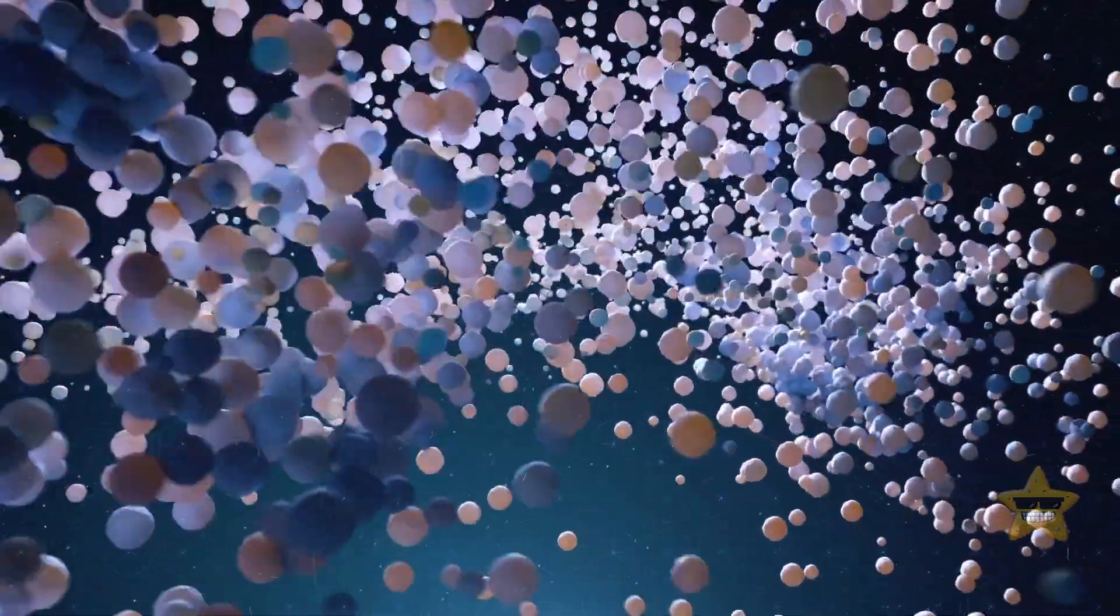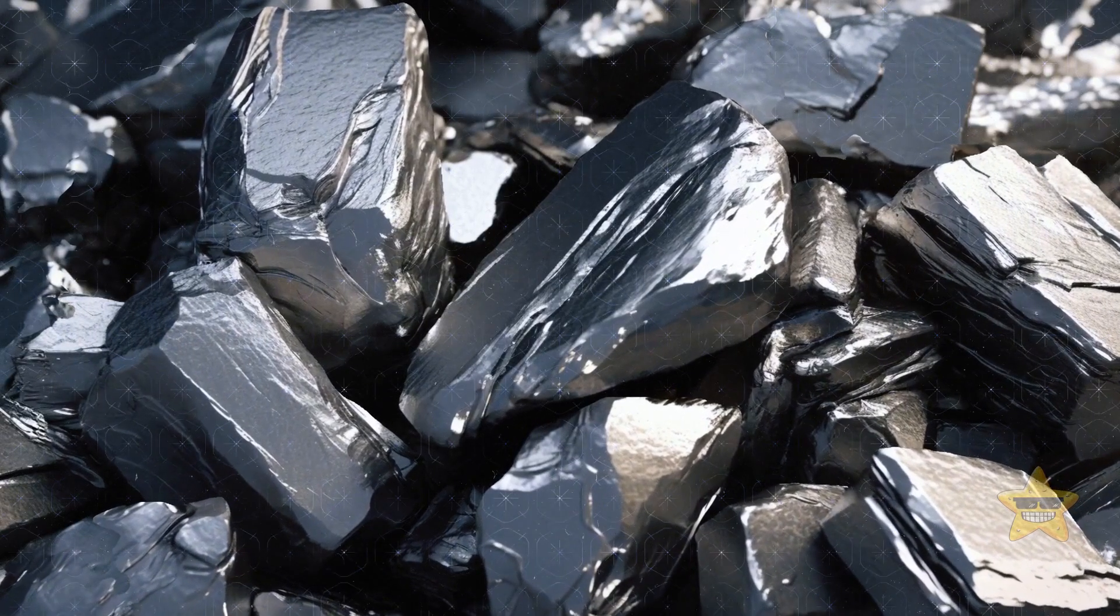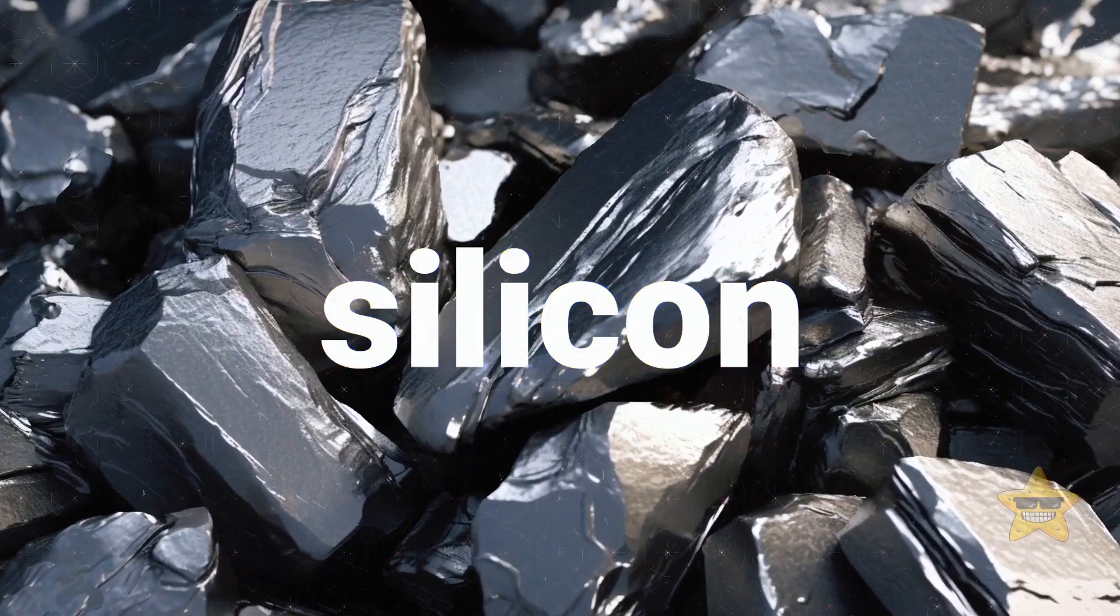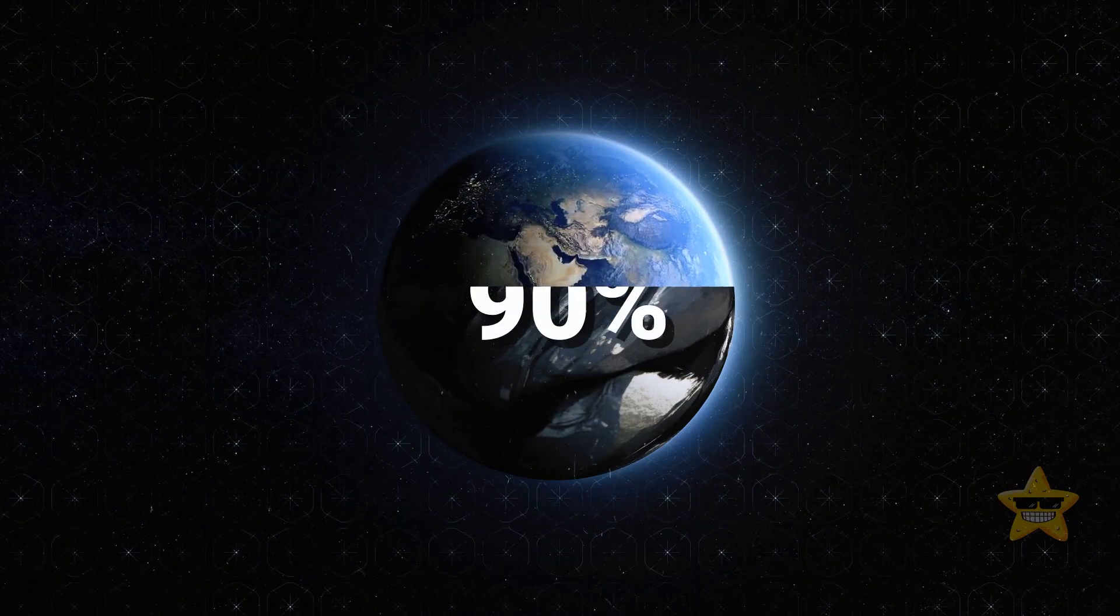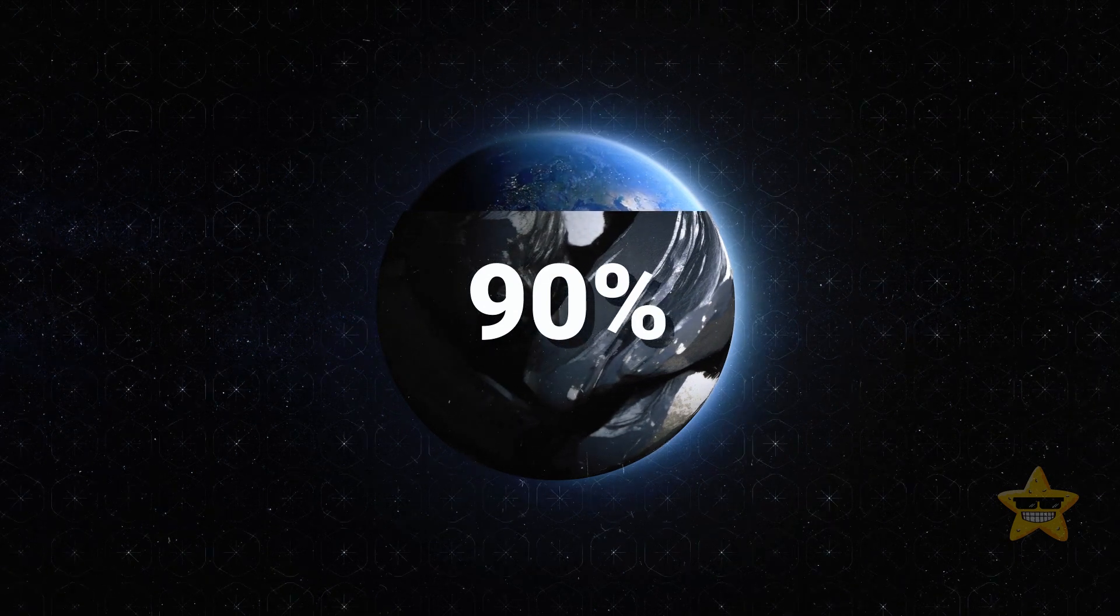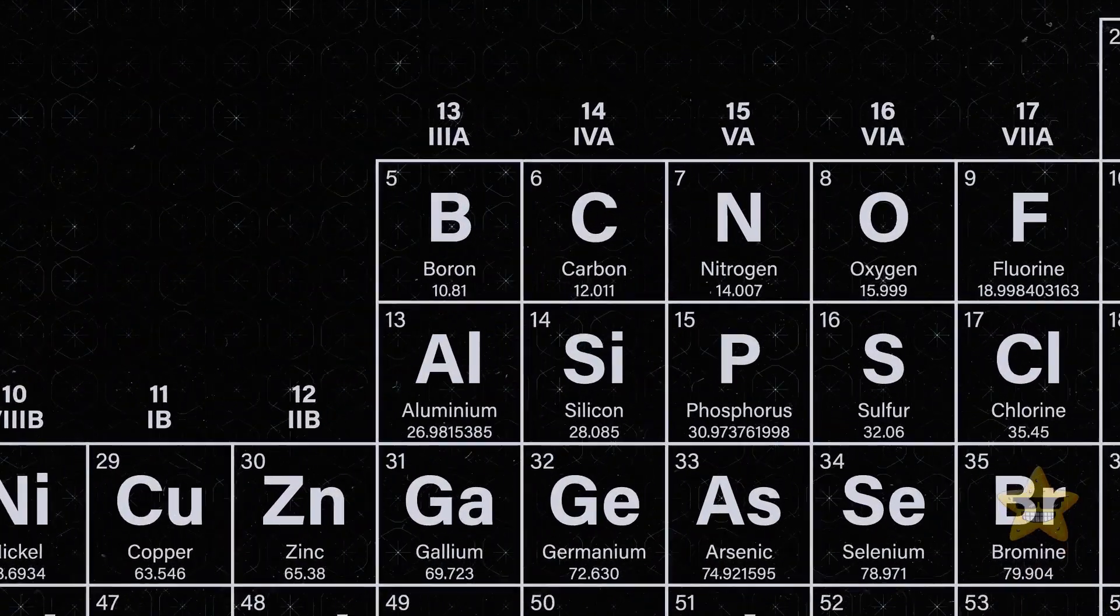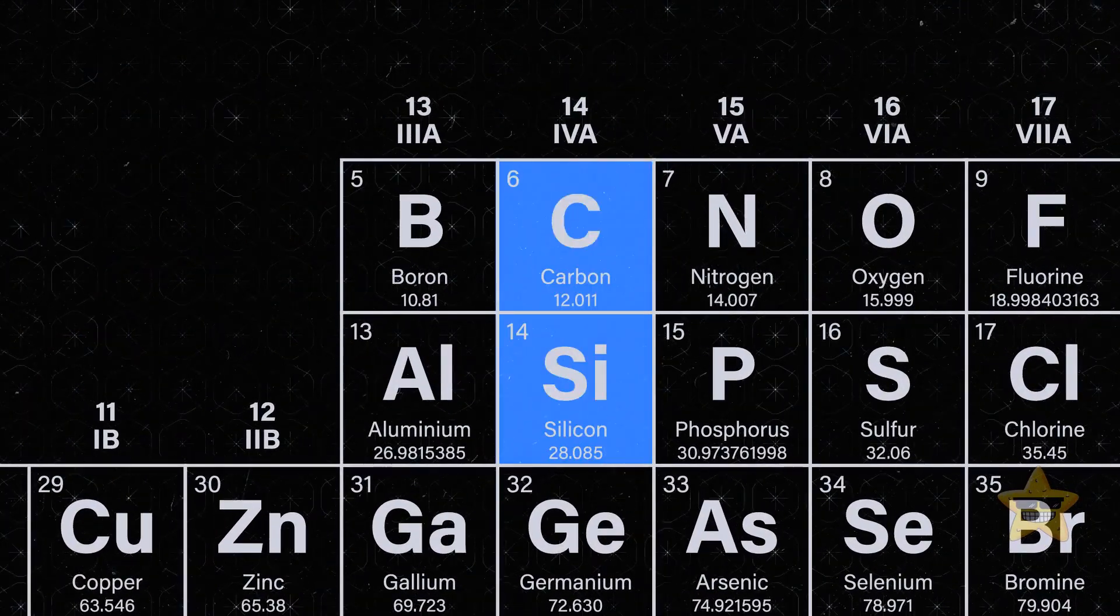But hold up - did you know that there's another super abundant element called silicon? More than 90% of the Earth's crust is composed of silicate minerals. On Earth, this element is second only to oxygen. Silicon is also carbon's neighbor on the periodic table.